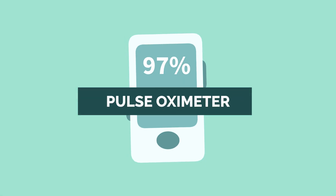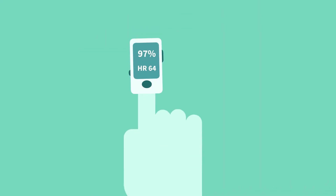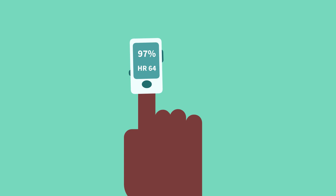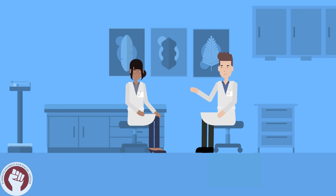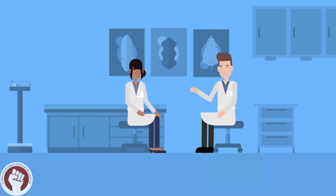The pulse oximeter is used universally to assess for hypoxia, but recently its accuracy in patients with darker skin tones has been called into question. Has anyone ever discussed this with you? No. In fact, I didn't think it was possible for medical devices to be influenced by bias.